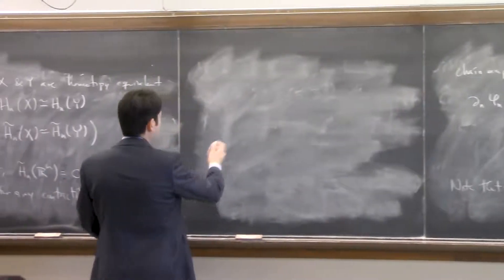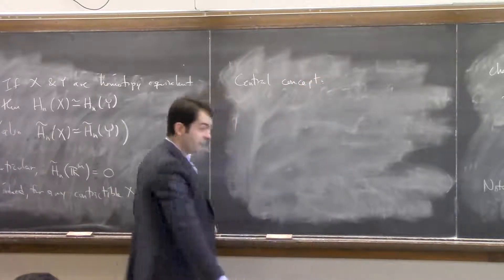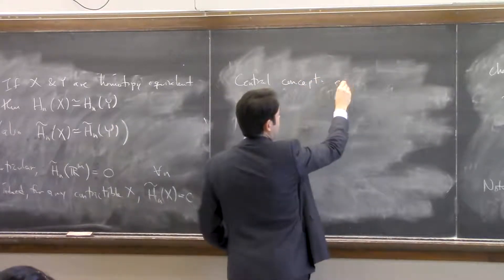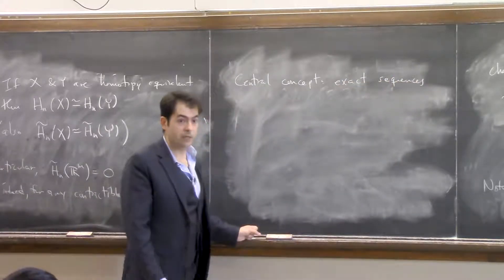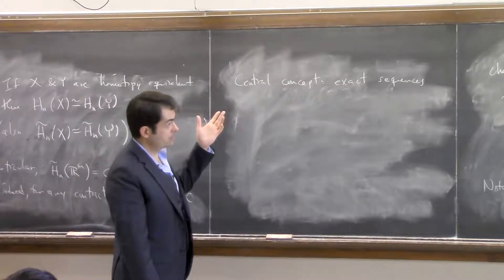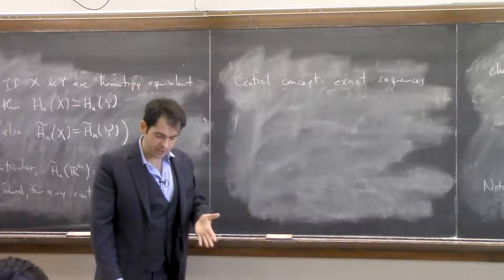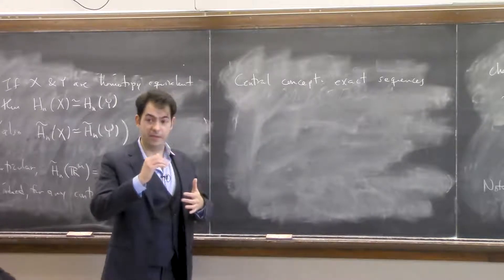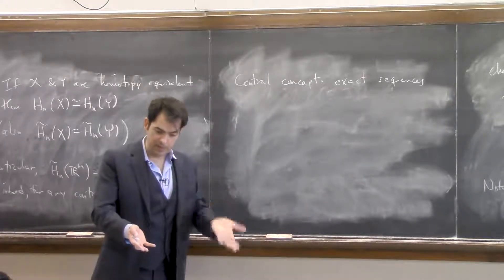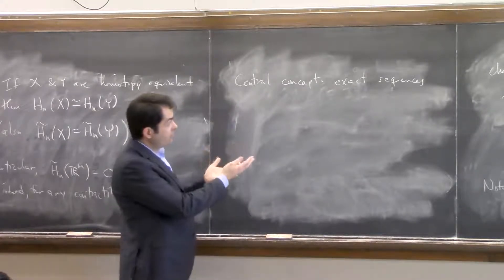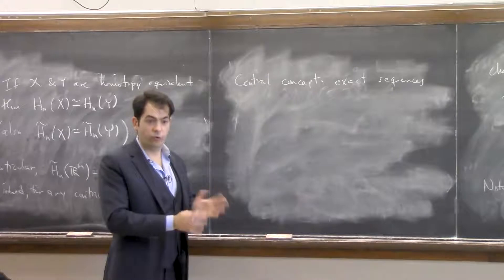We come to one of the central concepts of algebraic topology: exact sequences. Remember that homology is the kernel of the boundary divided by the image of the boundary — it measures the difference between kernel and image. Exactness is when there's no difference, when the kernel equals the image. So exact sequences are sequences where there's no homology.